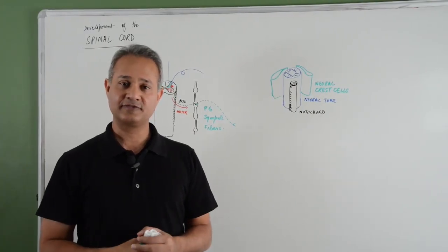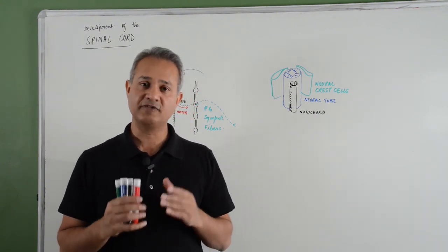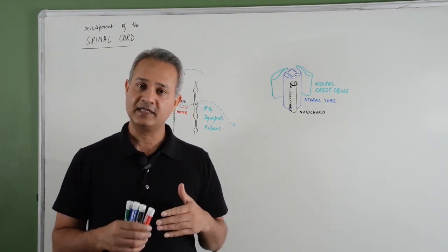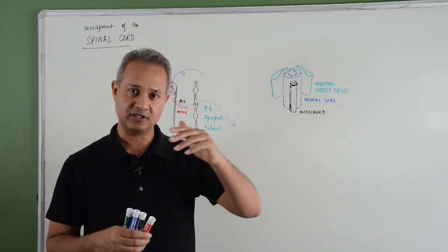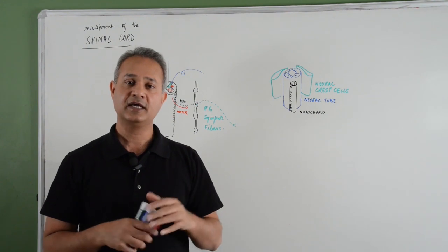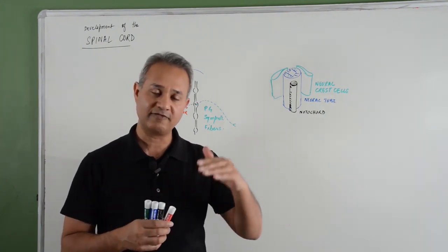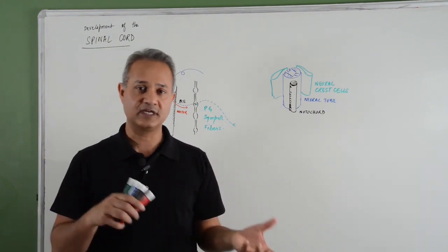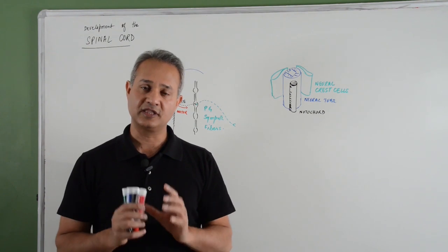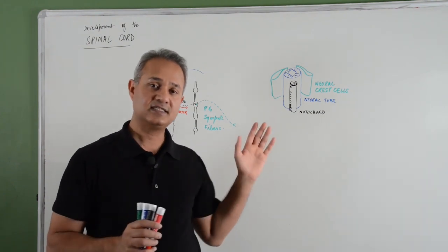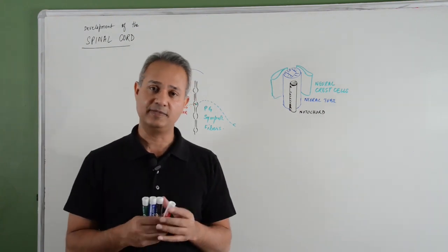Hey guys, this is Movin. We are talking about central nervous system development. The first lecture we just delivered was about the development of the brain — the gastrulation phase, neurulation phase, bilaminar to trilaminar germ disc, how the neural tube and neural crest come together, neural plate forms, neural pores, when they close. We have done all that structure and the brain formation before. This is the second lecture where we will be talking about spinal cord development.